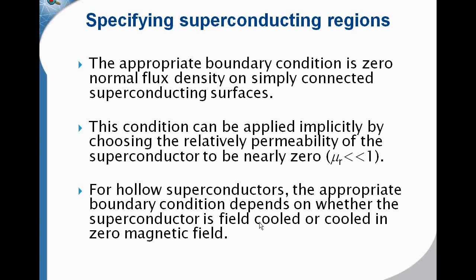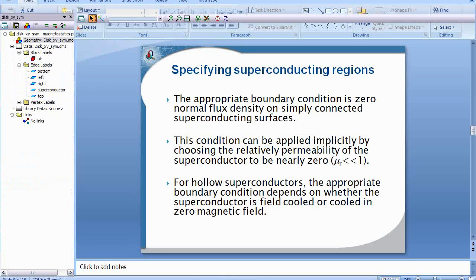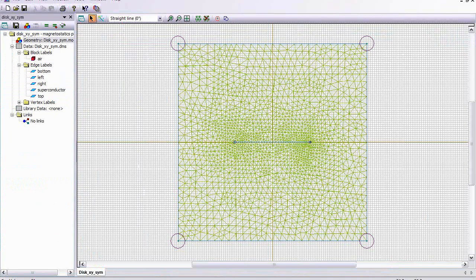So let's go ahead and look at a problem in QuickField using boundary conditions to specify the superconductor. In this problem, I have a solution region described by the four boundaries that you see here. And we're going to establish a uniform field inside of these boundaries here.